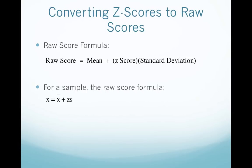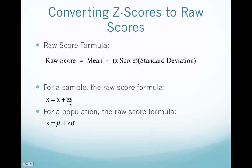For a sample, it's x equals x-bar plus z times s. For a population, x equals mu plus z times sigma. These two formulas are not new formulas — if you simply take the formula for a z-score and solve for x, isolating the variable x, you will arrive at these two formulas for the sample and the population. They're just the z-score formula rewritten with x isolated. What that allows us to easily do is find the raw score x when we only know the z-score.